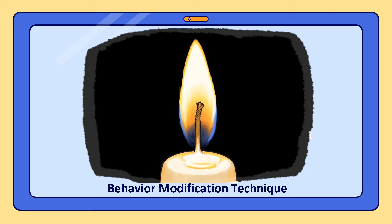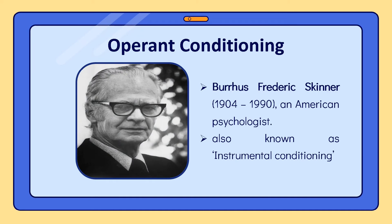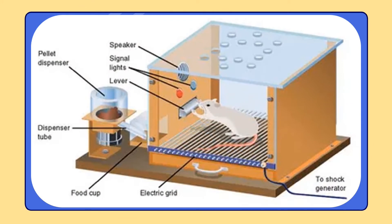Another form of learning under conditioning is operant conditioning, also called the theory of reinforcement. This method was developed by American psychologist B.F. Skinner, and is also known as instrumental conditioning, because the animals use certain operations or actions as instruments to find a solution. Skinner conducted his famous experiment by placing a hungry rat in a box called, after his name, the Skinner Box.